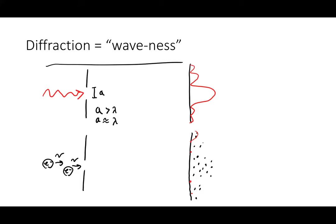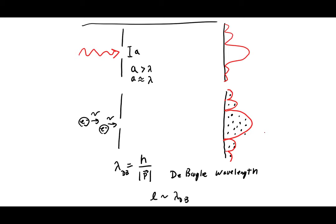We can trace out the probability of an electron hitting the screen at a given spot, and it looks exactly like the intensity pattern of a diffraction experiment. This gives us the de Broglie wavelength: electrons participate in diffraction when the slit is comparable in size to their de Broglie wavelength, defined as λ = h/p — Planck's constant divided by momentum. This applies to everything, though wave-like properties only matter when the relevant length scale is on the order of the de Broglie wavelength.